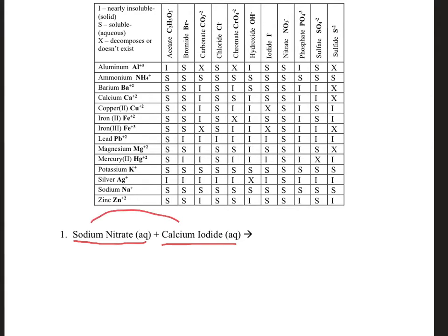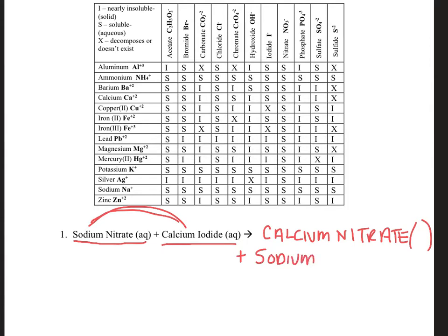Let's look and see what the potential products will be. If calcium and sodium switch, calcium is now going to be with nitrate, so we can write that as calcium nitrate. I don't know exactly if calcium nitrate will be aqueous or solid, so I'm going to leave that parentheses blank. The other thing that's going to be created is sodium with iodide — so these are going to be my two products. I'll leave sodium iodide's parentheses blank as well because I don't quite know yet if it's solid or aqueous.